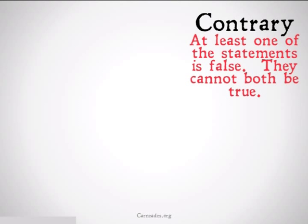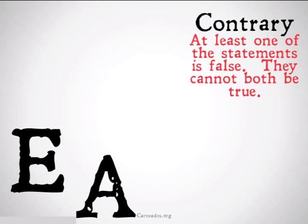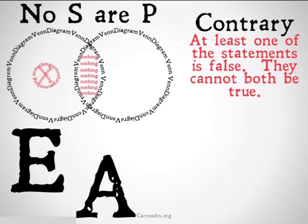Contrary is at least one of two statements being false. They cannot both be true, but they could both be false. In the case of Aristotelian categorical logic, the statements that fit this description are E and A statements.